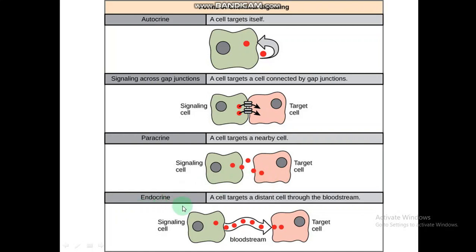In endocrine signaling, a cell targets a distant cell through the bloodstream. The signaling cell, like glands, secretes different types of ligands or signaling molecules, which pass through the bloodstream and then target the cell.